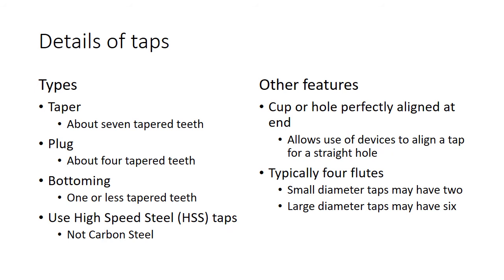Taps can have four or six flutes — usually four or even two for very small taps — and are made from high-speed steel or some other high-carbon alloy.